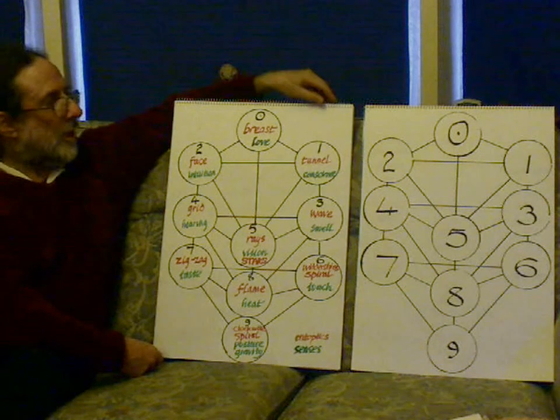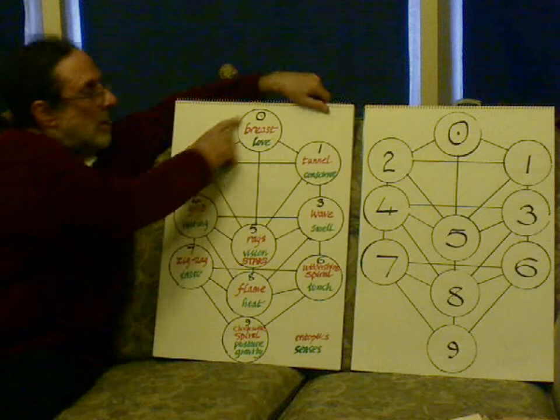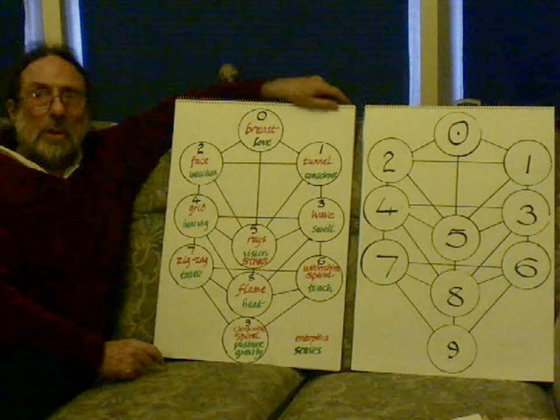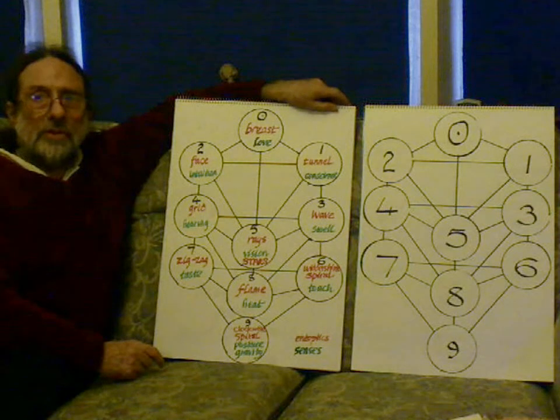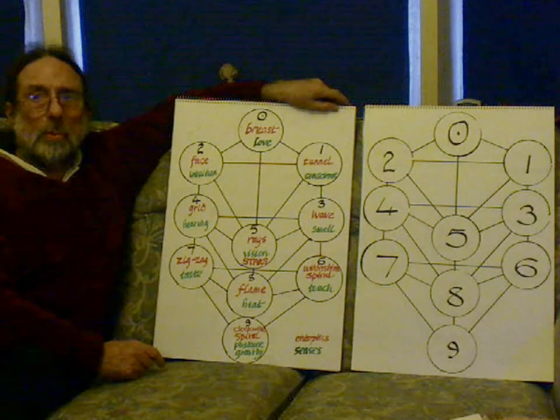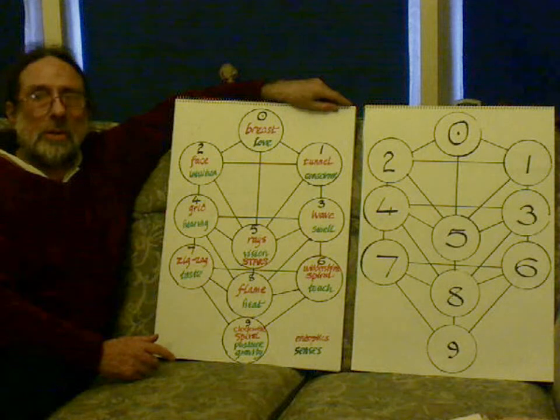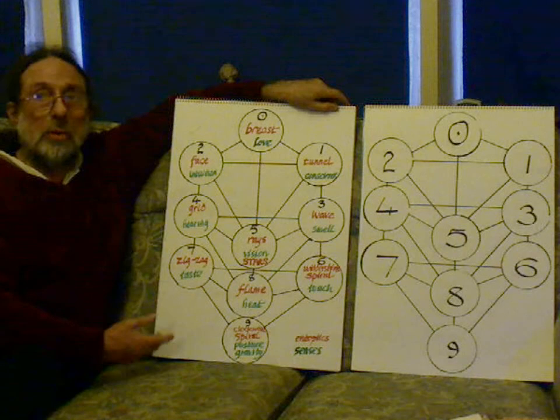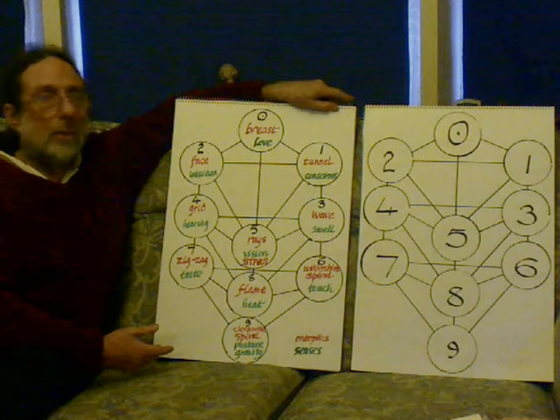So these are the numbers. The number zero is a breast, a circle with a point. So in our minds, in every situation there is a point. What is the point of this? The point of this is to use your mind, to use your imagination.